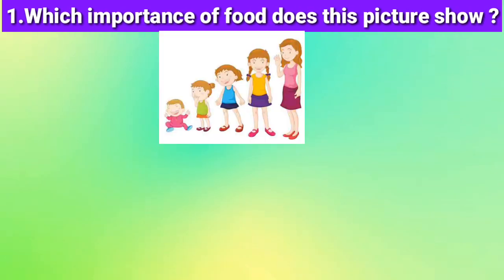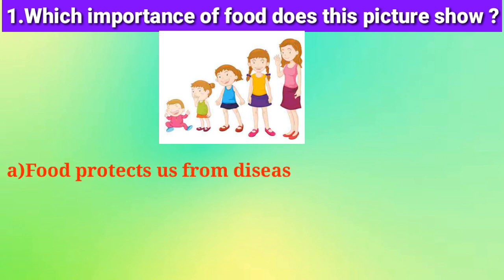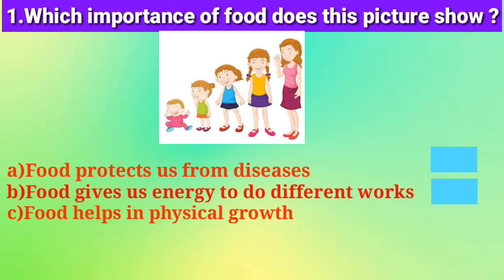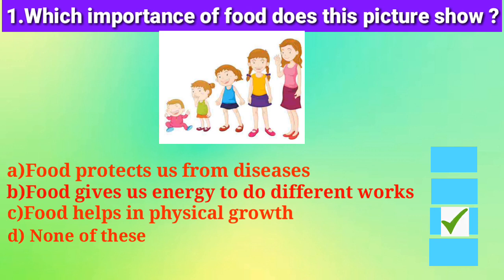The first question is: which importance of food does this picture show? The options are: food protects us from diseases, food gives us energy to do different works, food helps in physical growth, or none of these. The right option is option C. This picture is showing physical growth, in which food helps us.